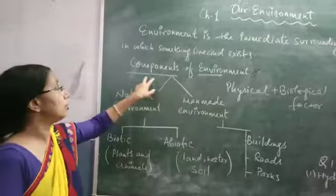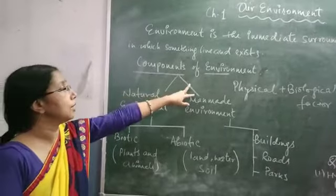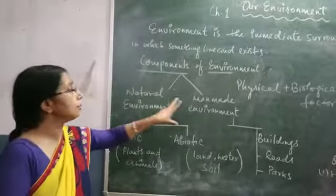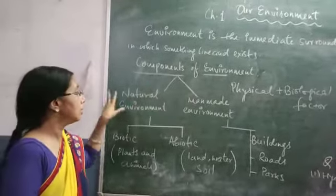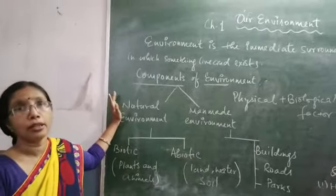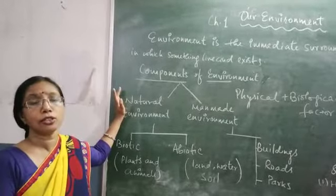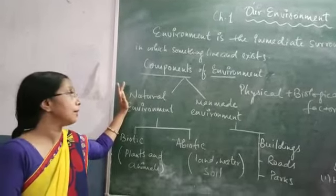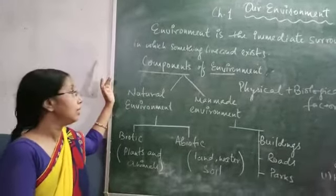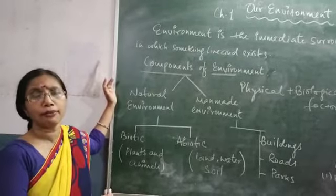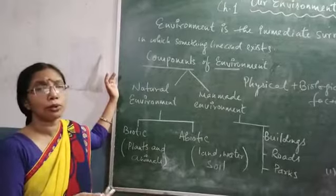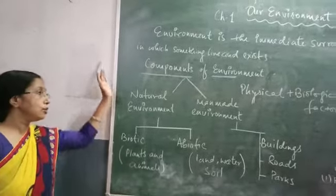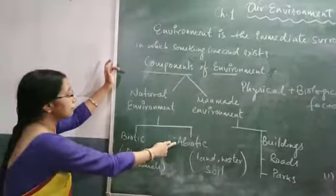The environment has two components: natural environment and man-made environment. The natural environment is the environment provided by nature — rivers, ocean lakes, and beautiful things in nature. These are the natural environment. The environment also has two further components: abiotic and biotic.